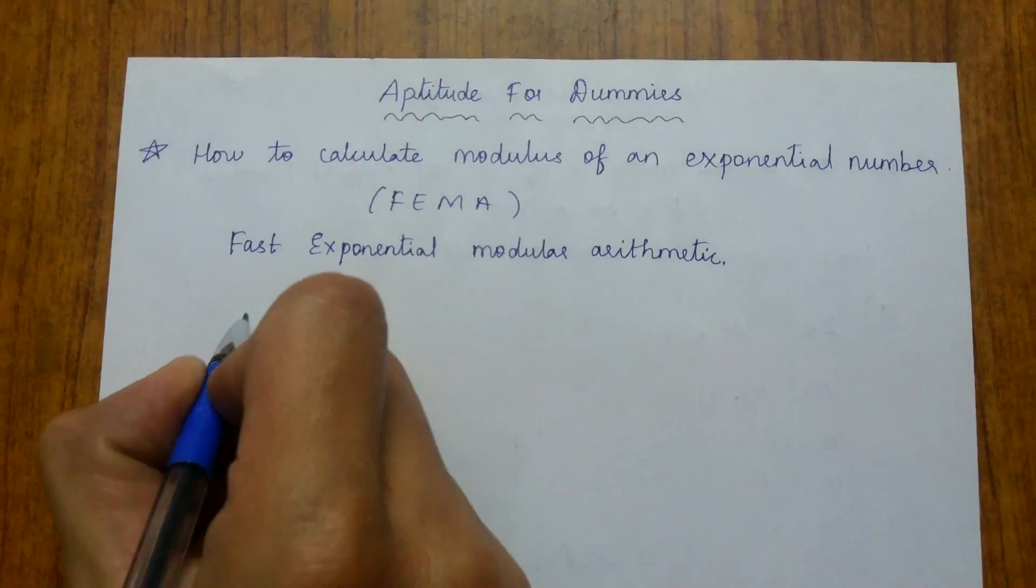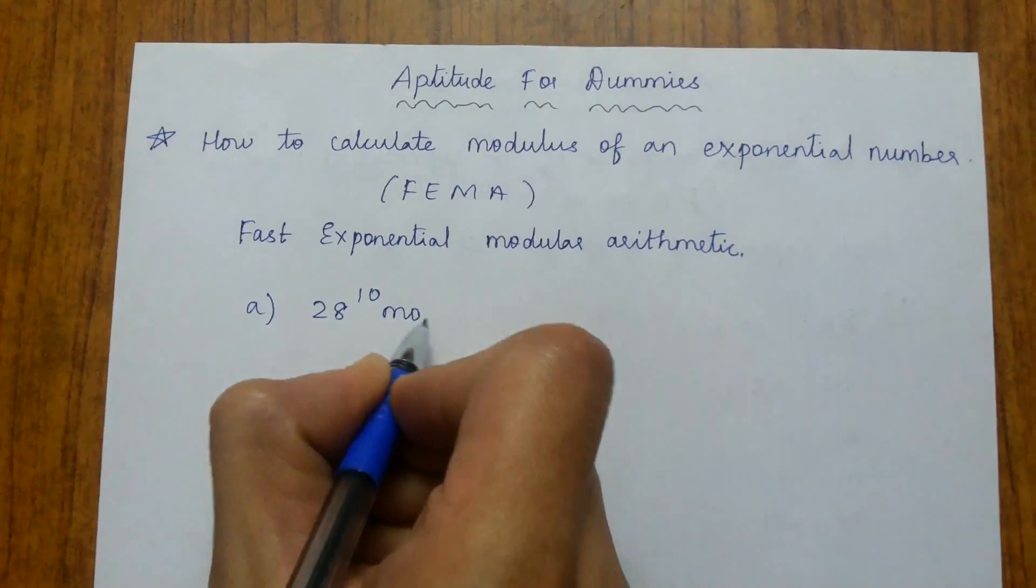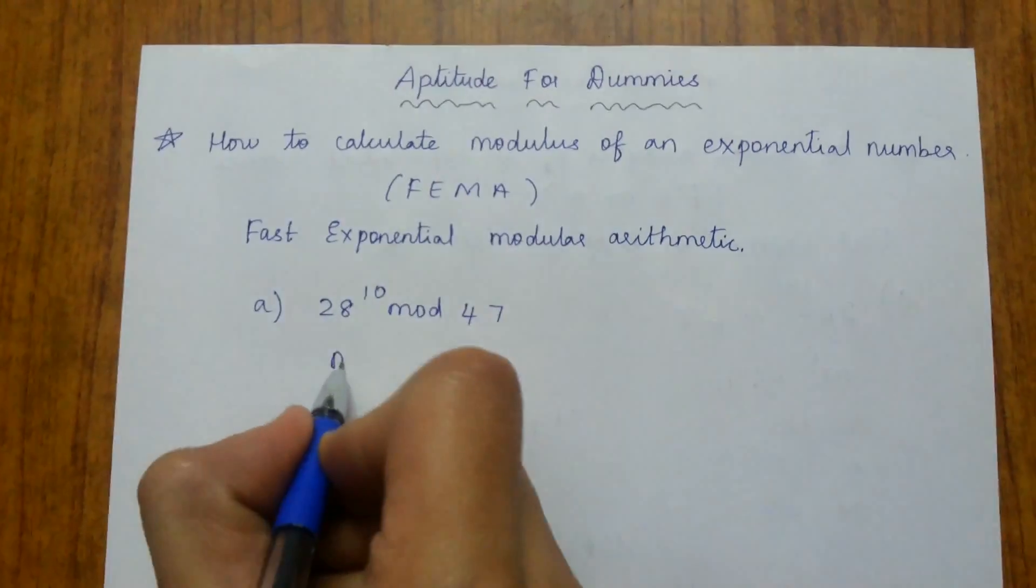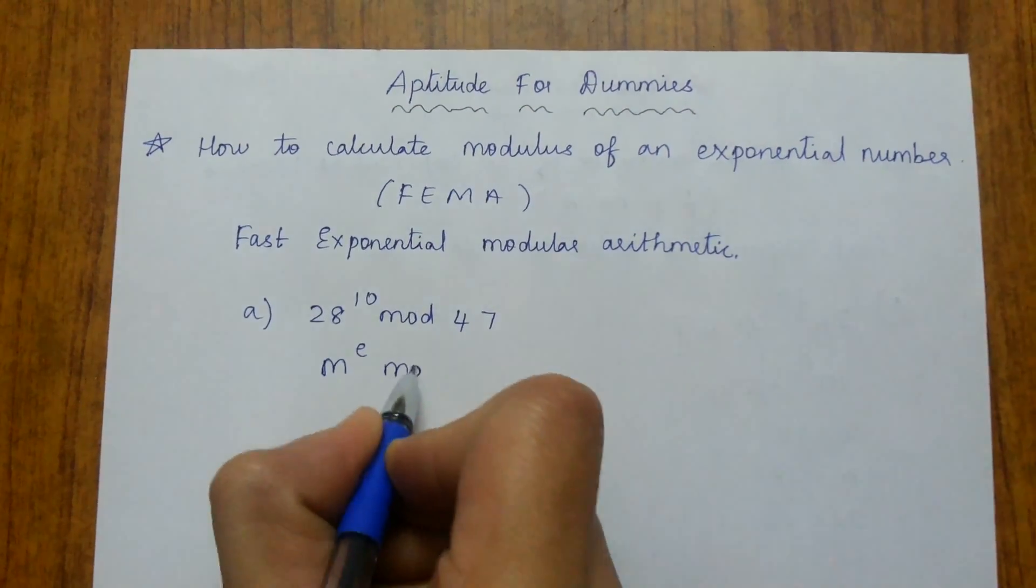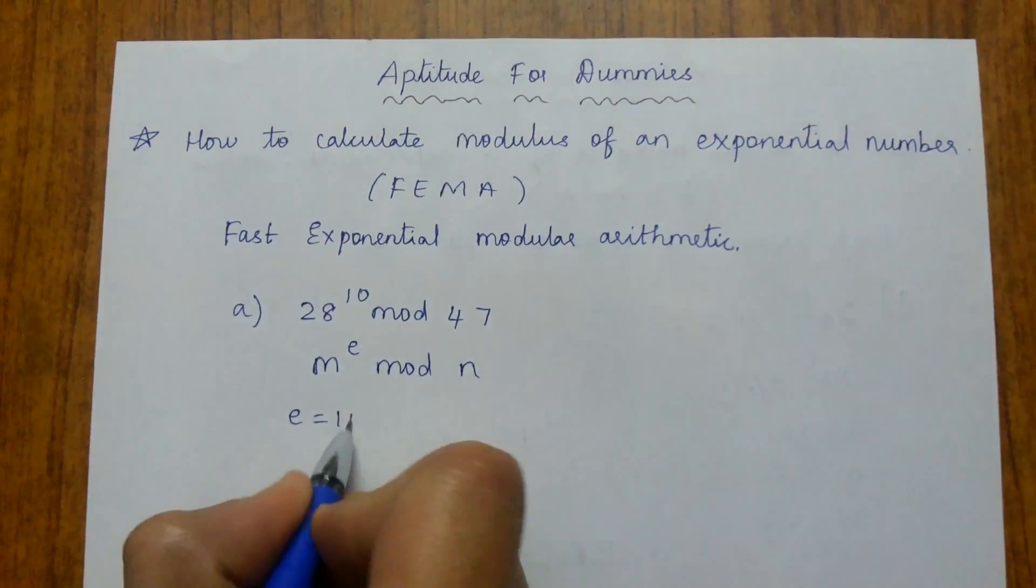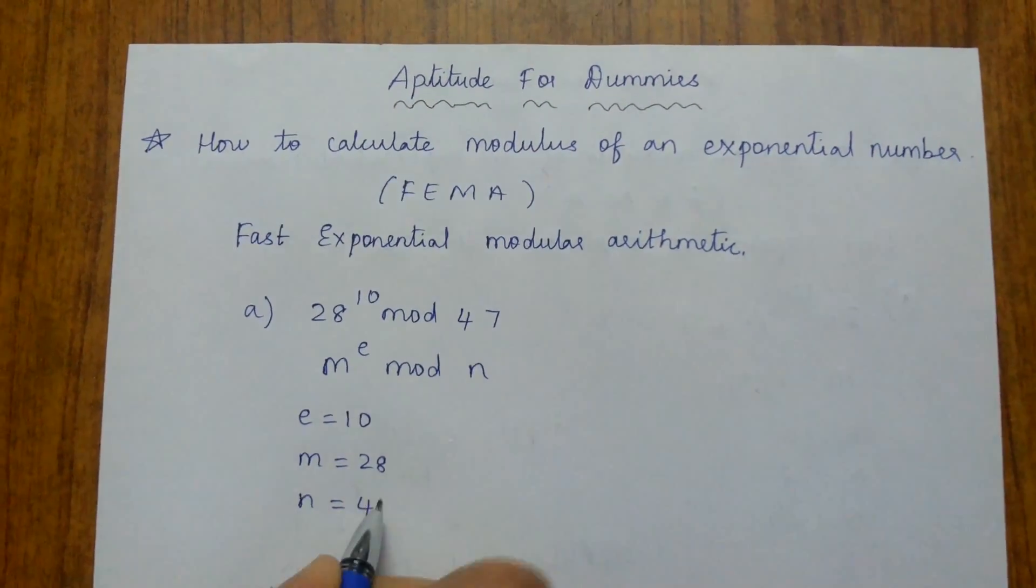Let's take a problem: 28^10 mod 47. Whenever you see a problem in the form m^e mod n, here e is 10, m is 28, and n is 47.